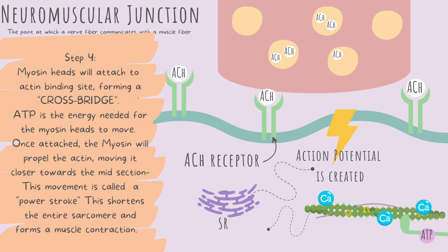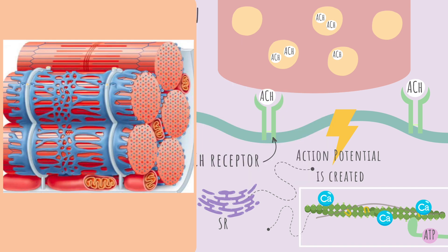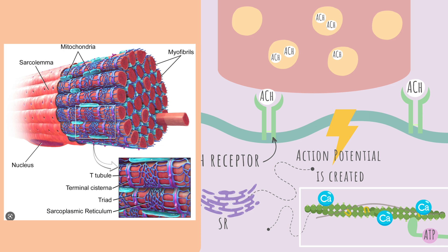Here's the picture of the sarcoplasmic reticulum so you can visualize exactly where it's found — it surrounds each myofibril. Sometimes the sarcoplasmic reticulum gets confused with the sarcolemma. The sarcolemma surrounds the muscle fiber while the sarcoplasmic reticulum surrounds each myofibril.